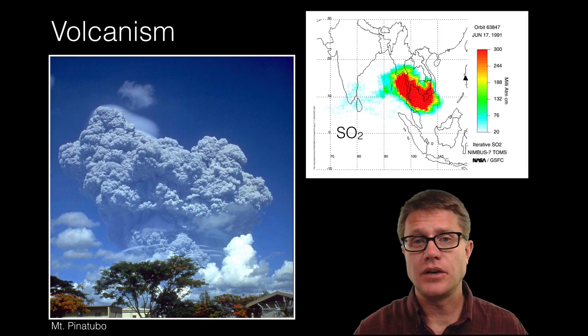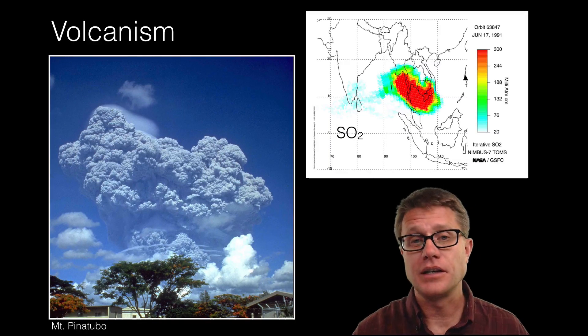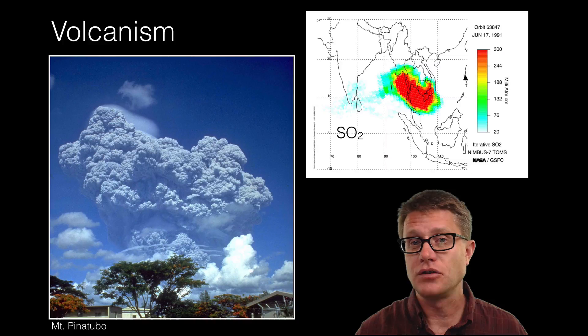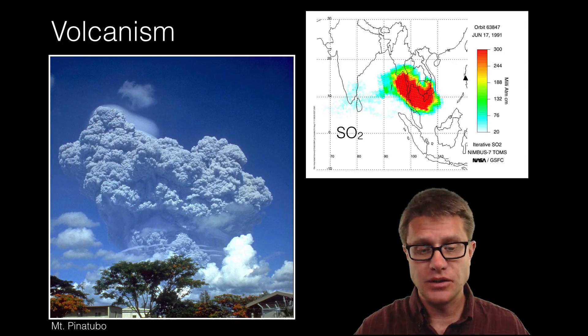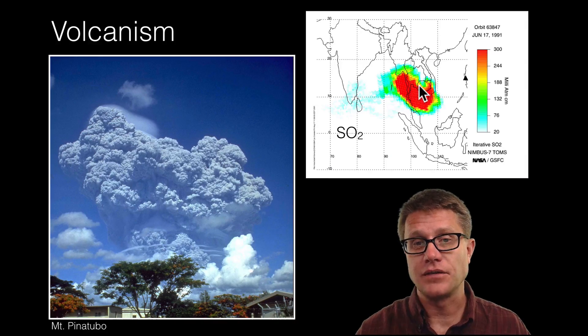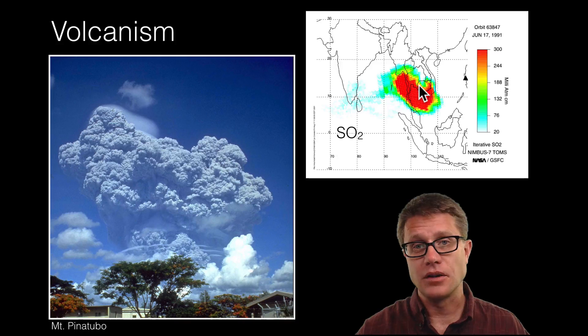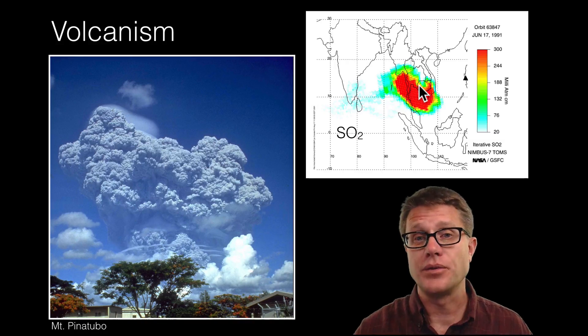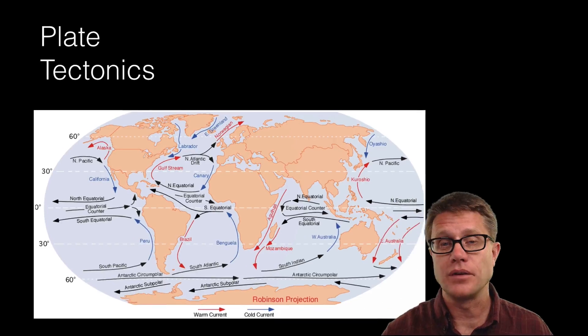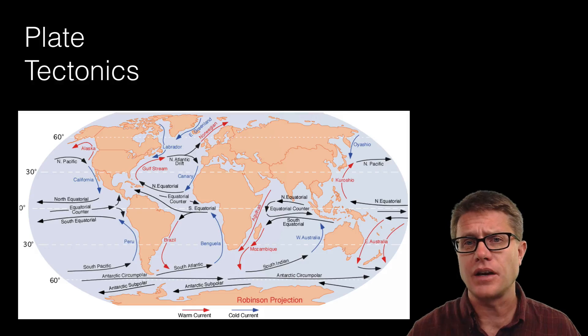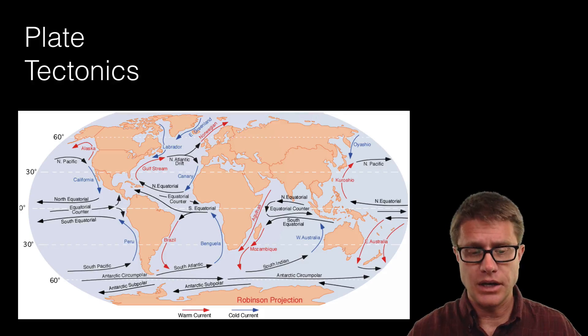Another thing that can affect climate is going to be volcanoes. And so for example in 1991, in the Philippines, Mount Pinatubo exploded. That increases the amount of sulfur dioxide in the atmosphere and it cools the planet. So the planet cooled over the next three years just due to this one eruption. And then we can have plate tectonics that is affecting the amount of energy we get as well.